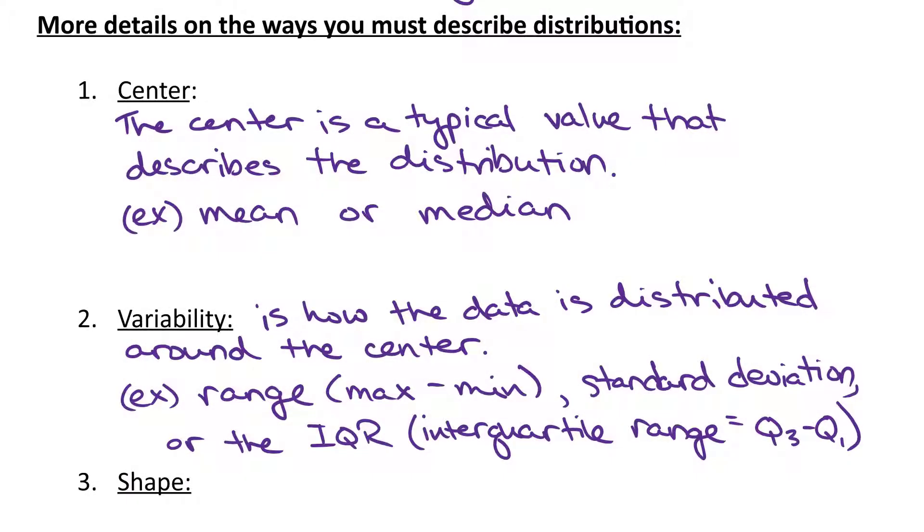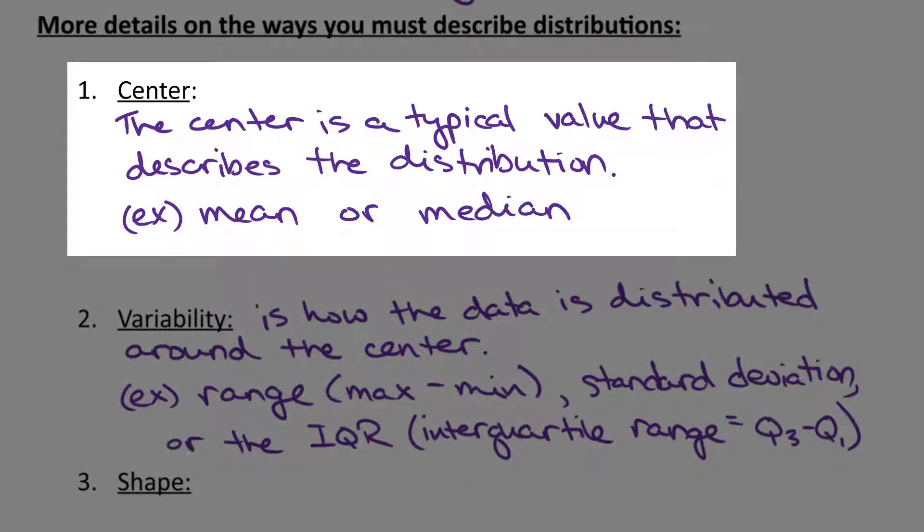Let's get into some of these details of the center, variability, and shape. The center is a typical value that describes your distribution. For example, your mean or your median. We'll talk about the modes of a distribution, but not to describe a measure of center. In AP Stats, we'll always focus on either the mean or the median.